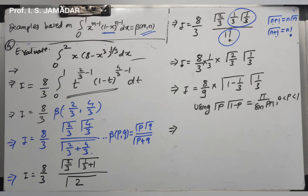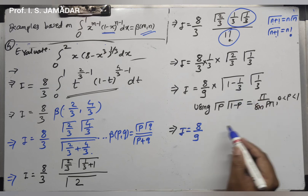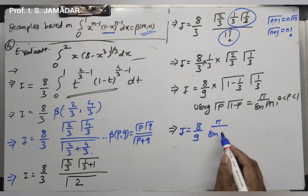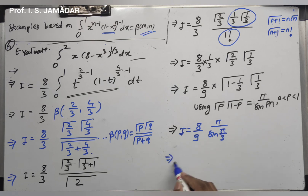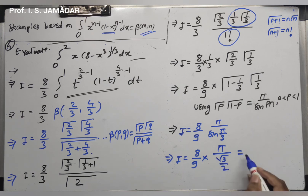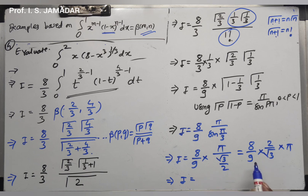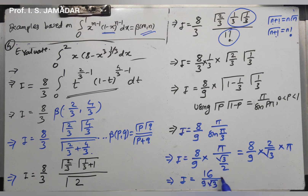Since sin(π/3) = sin(60°) = √3/2, substituting gives I equals (8/9) times π divided by (√3/2) = (8/9) times (2π/√3) = 16π / (9√3). This is the final answer for example 4.